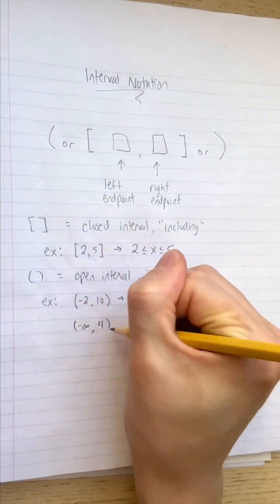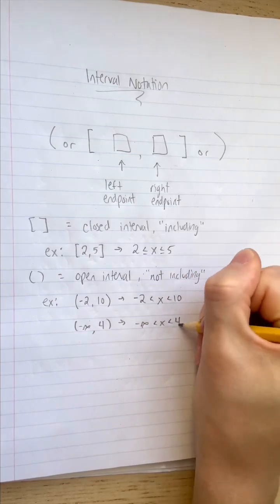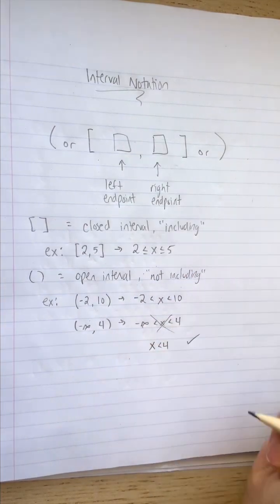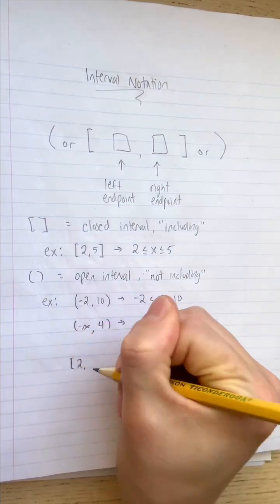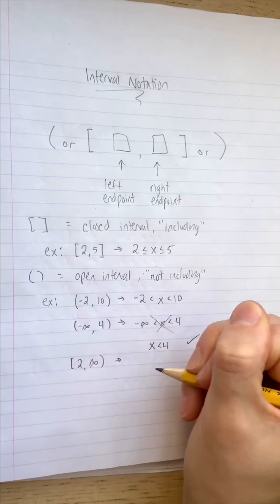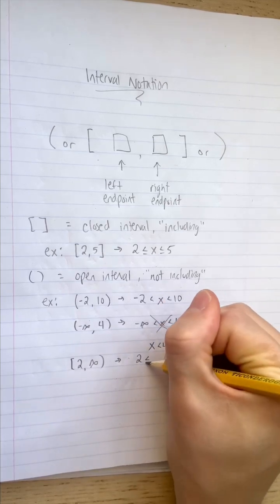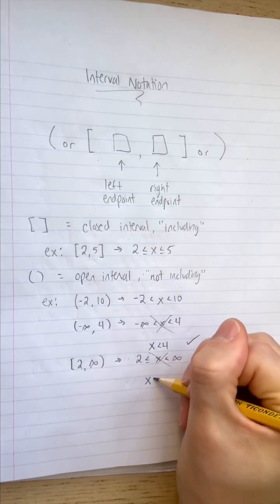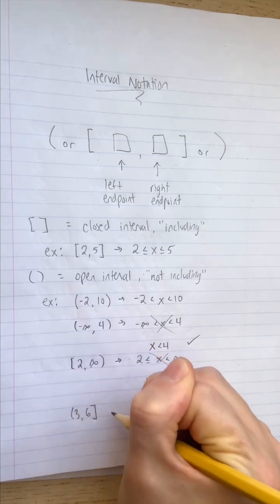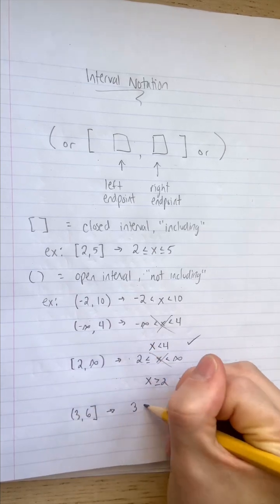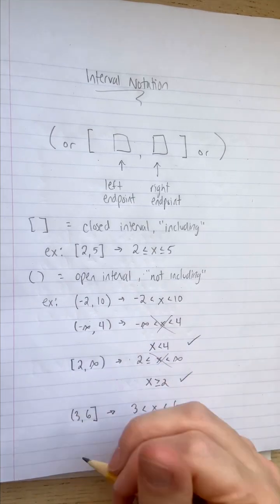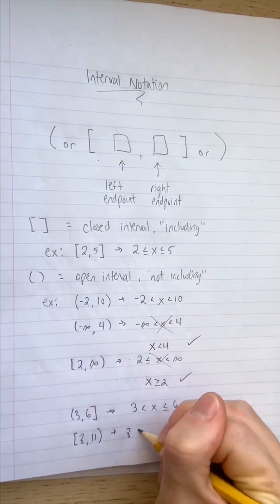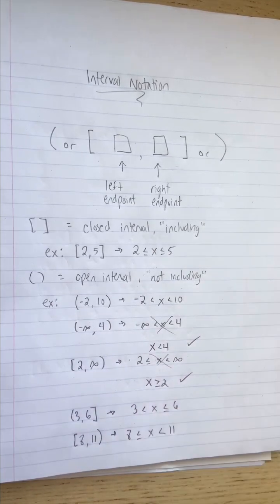We also use parentheses to describe intervals that extend to negative or positive infinity, since those aren't real numbers and can't be included in the interval. We can also mix and match brackets and parentheses as needed. This notation saves us time, but is easily confused with coordinates, so it's important to know which is which.